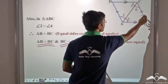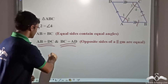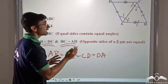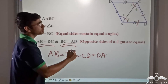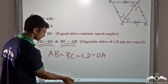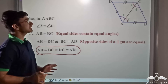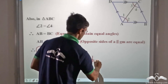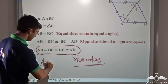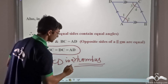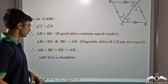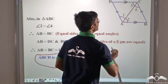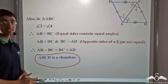We know ABCD is a parallelogram where opposite sides are equal, so BC is equal to AD. Since AB equals BC, and opposite sides are also equal, all four sides become equal. When all four sides of a parallelogram are equal, it is a special case — it is a rhombus. Thus we have proved that when a diagonal bisects both angles, the parallelogram ABCD is a rhombus.